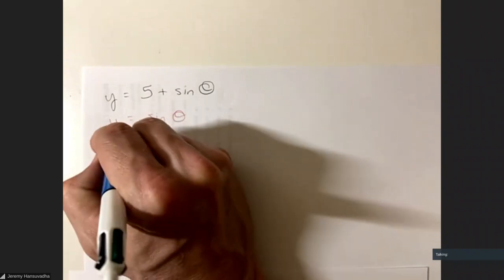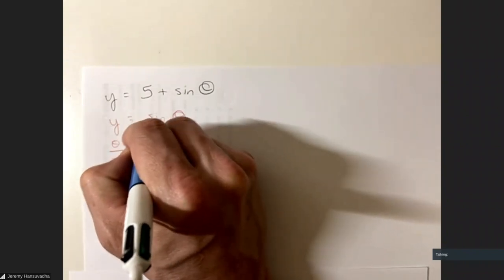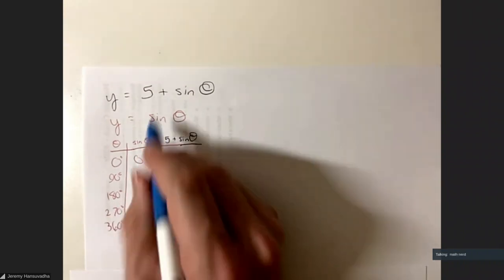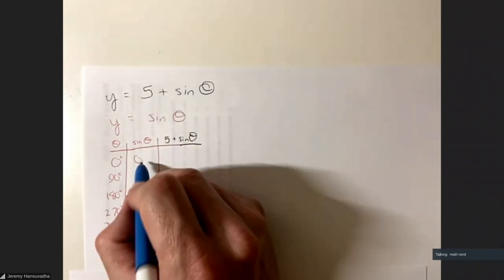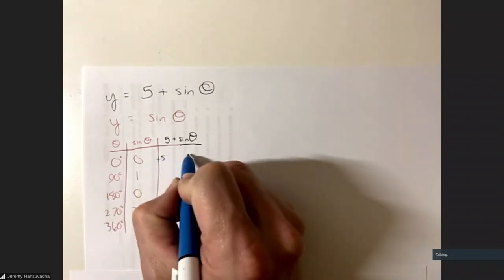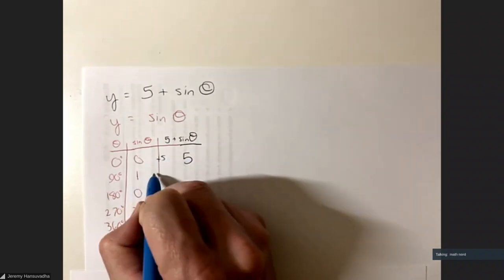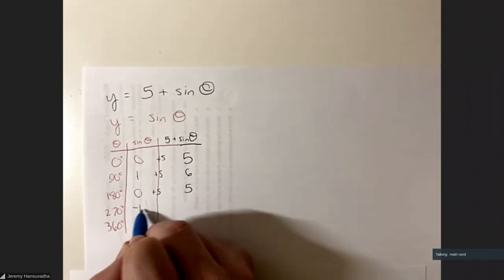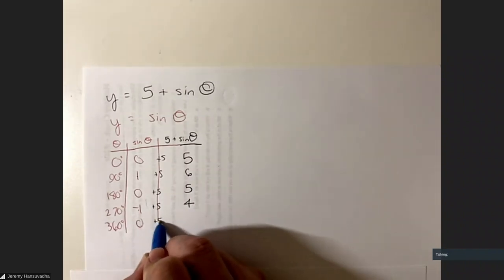We take the values from sine θ and add five to each one: 0 plus 5 equals 5; 1 plus 5 equals 6; 0 plus 5 equals 5; negative 1 plus 5 equals 4; and 0 plus 5 equals 5.